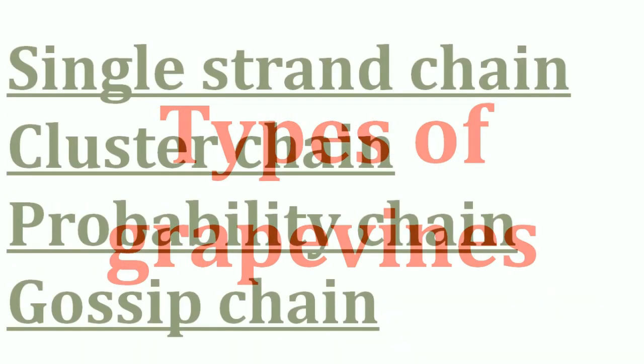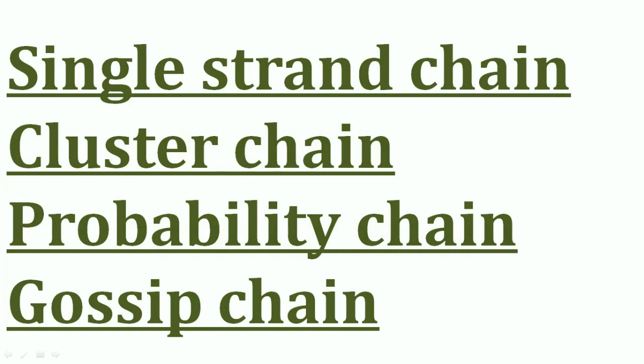The next question is types of grapevines. There are four: single chain, cluster chain, probability chain, and gossip chain. This is a very important question. The headings are simple enough to memorize easily. If a short trick is available in the future, it will be in the description box below.